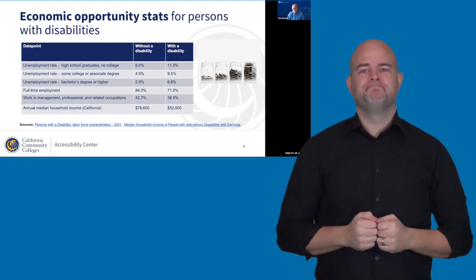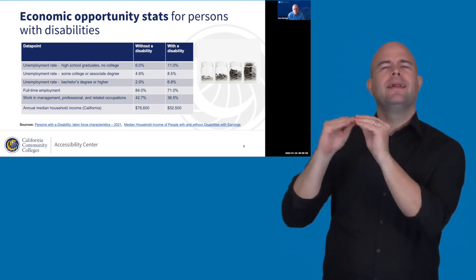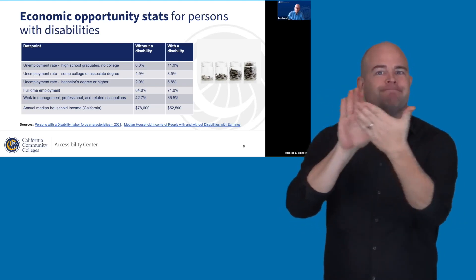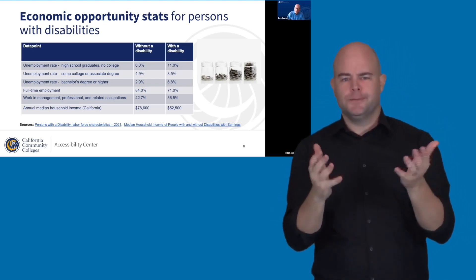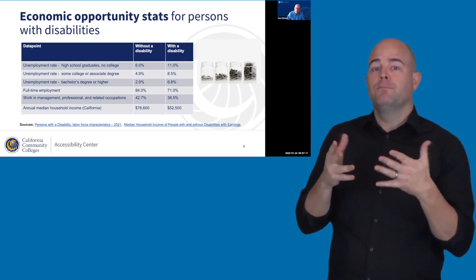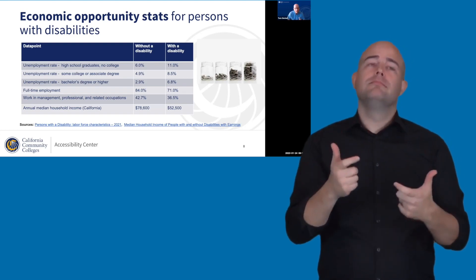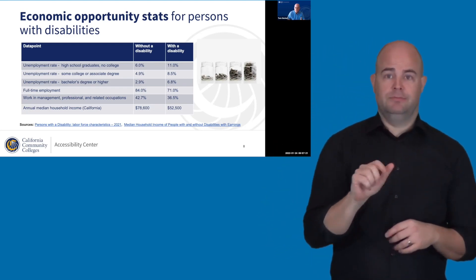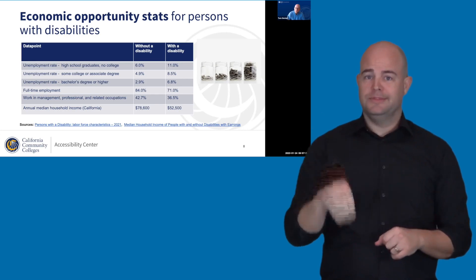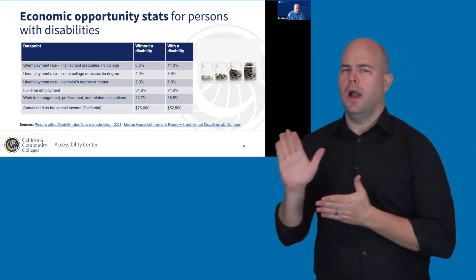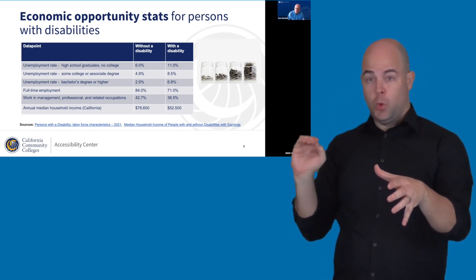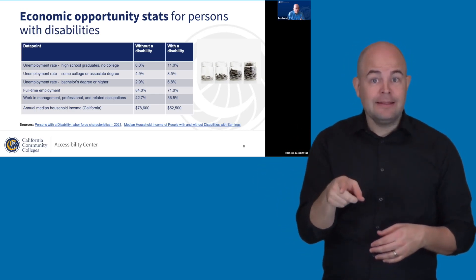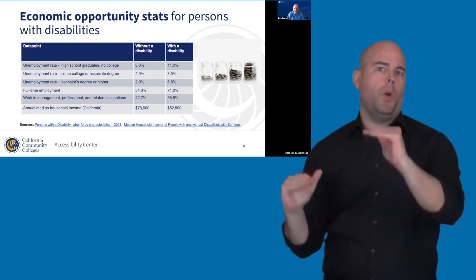These are statistics from 2021 that talk about some of the challenges individuals with disabilities face. Looking at unemployment rates, there's a big disparity. For high school graduates without any college experience, people without a disability have an unemployment rate of 6%, while for someone with a disability it jumps up to 11% — a really big disparity.